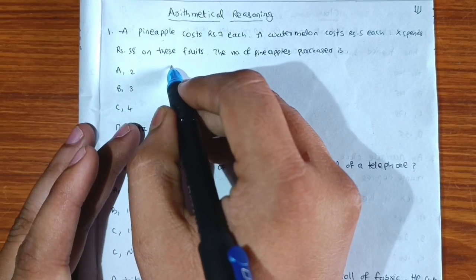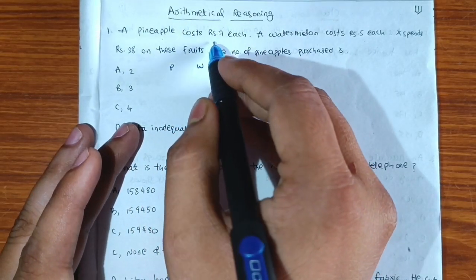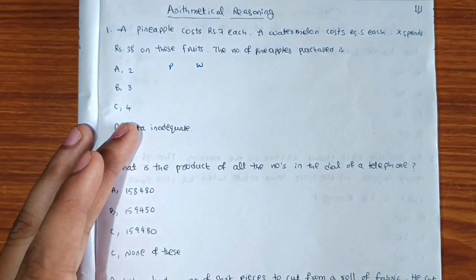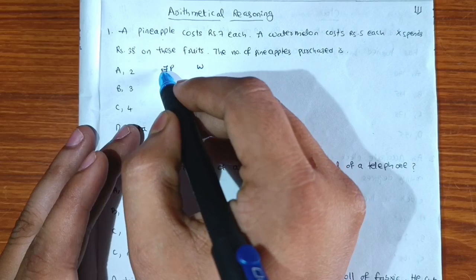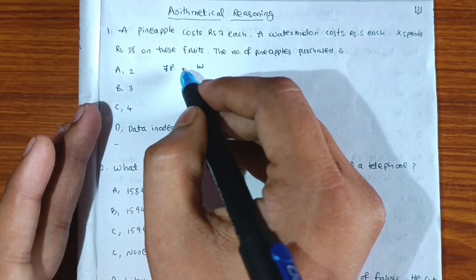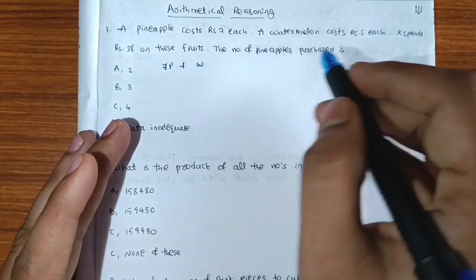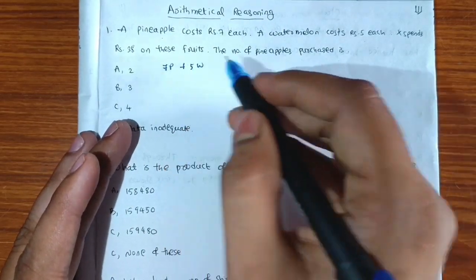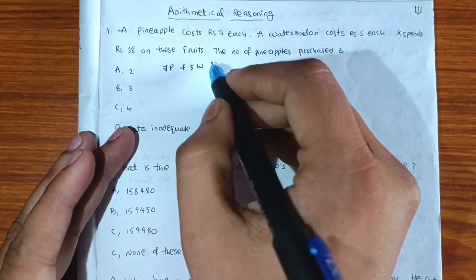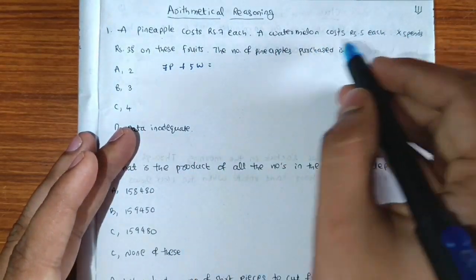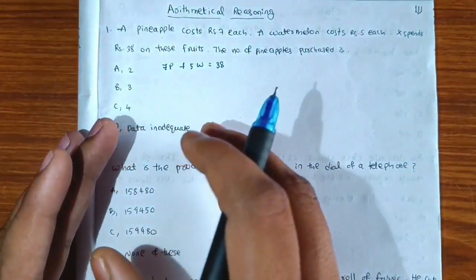Let the number of pineapples be p and the number of watermelons be w. The equation is: 7p + 5w = 38, since pineapples cost 7 rupees each and watermelons cost 5 rupees each, and the total spent is 38.